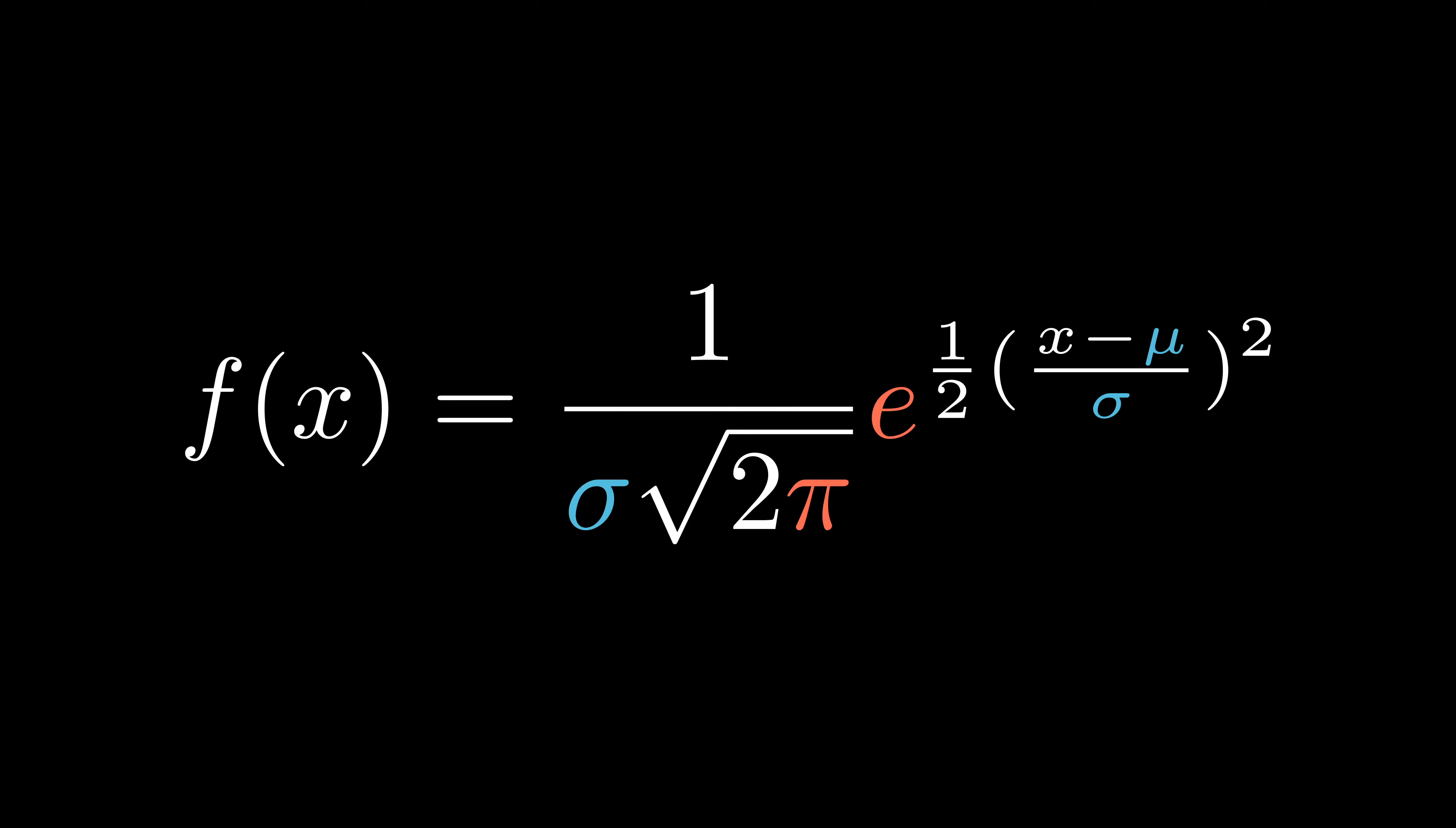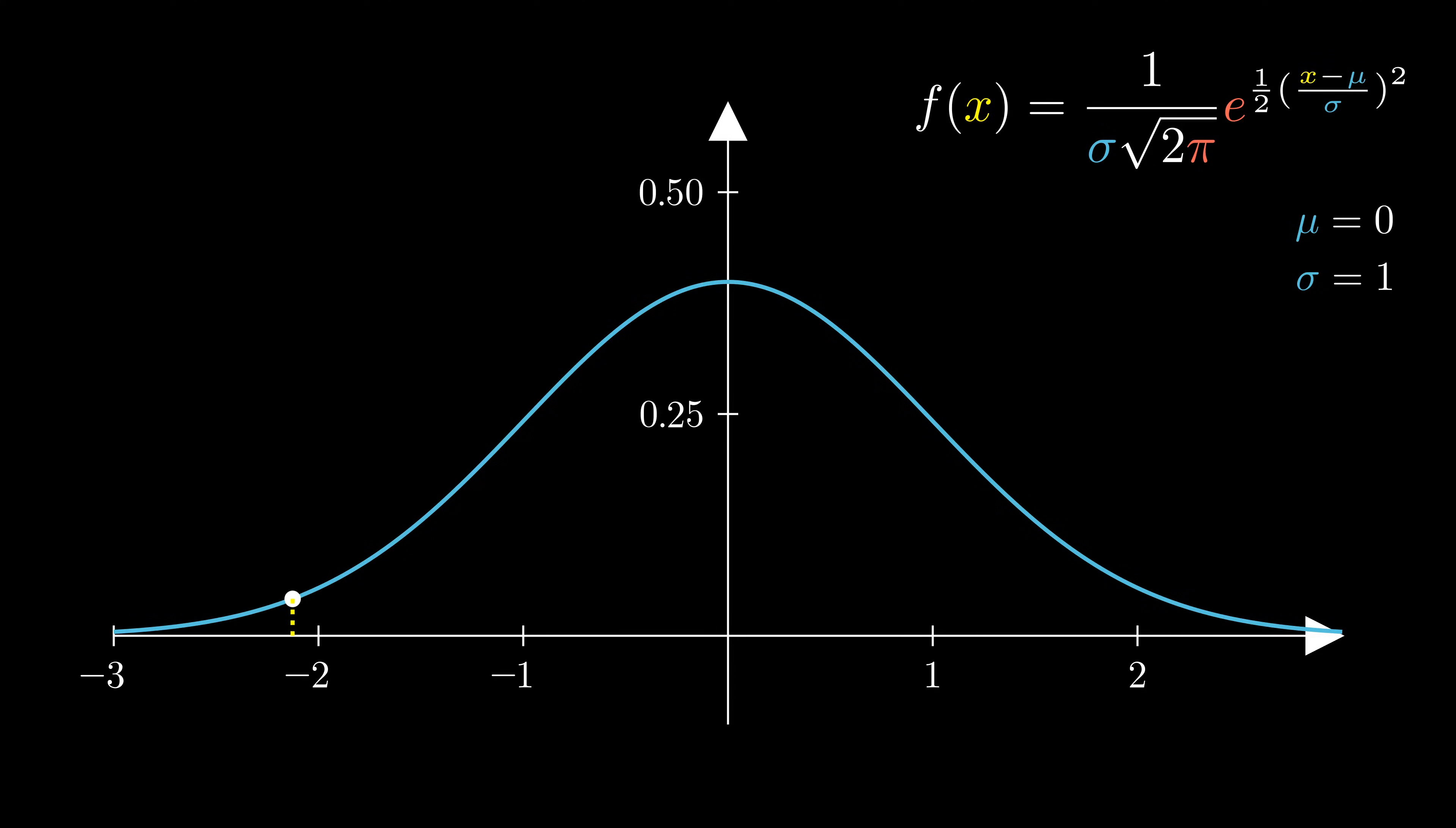They control where the bell curve is located, as well as how spread out it is. Those are calculated beforehand and are fixed. This leaves us with only one variable x. Everything else is fixed, and then we can produce our bell curve function.